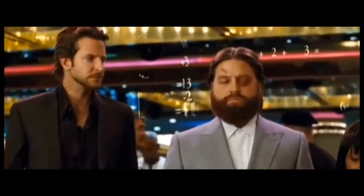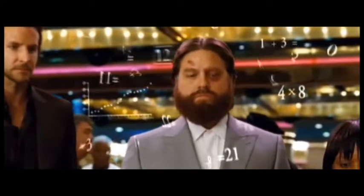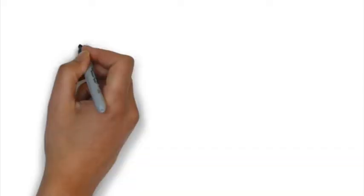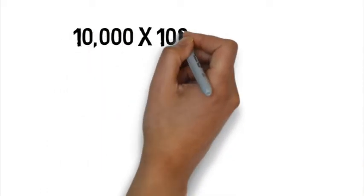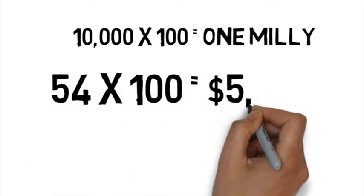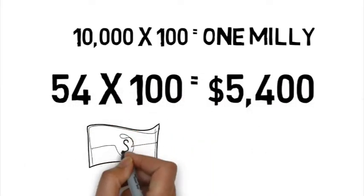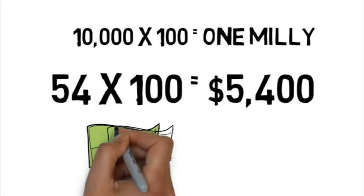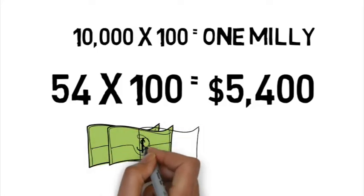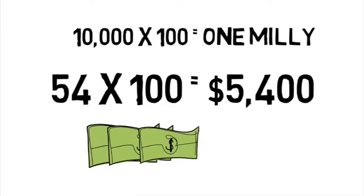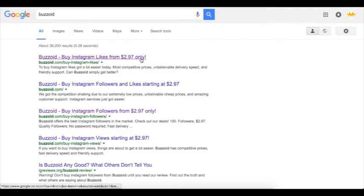So if we do some vigorous mathematics, 10,000 times 100 equals 1 million. So $54 times 100 equals $5,500 for 1 million followers. We all want a million subscribers. So that's their cheapest option, $5,500.